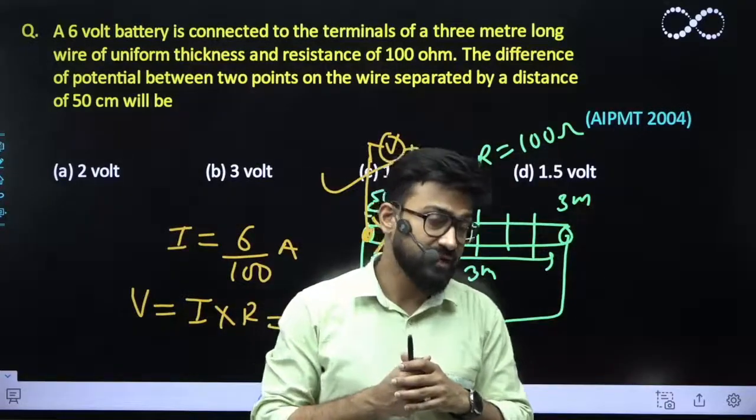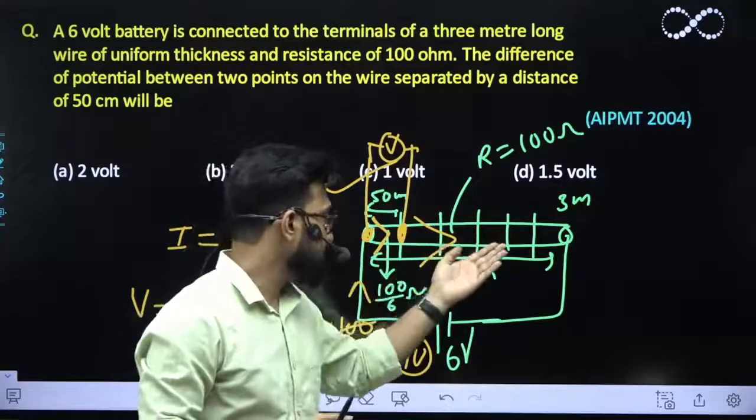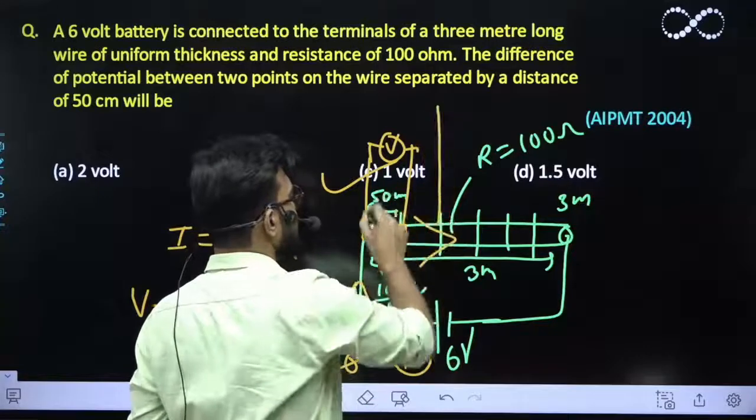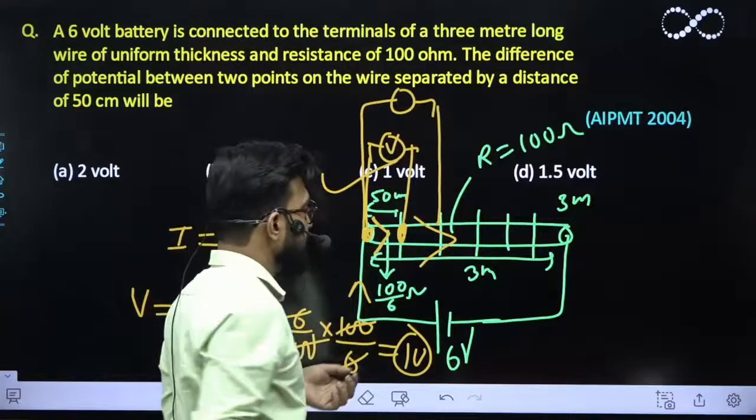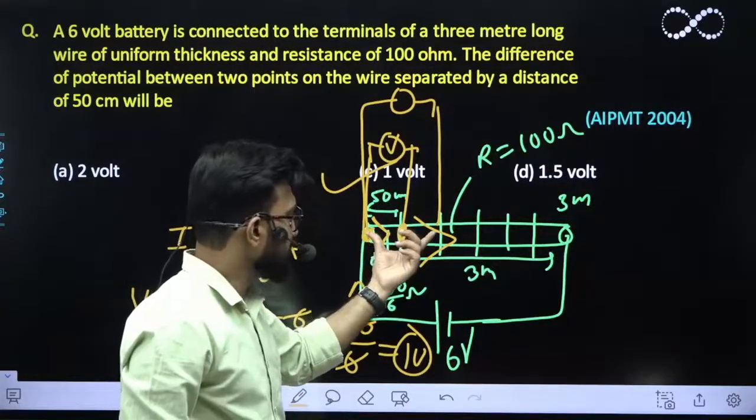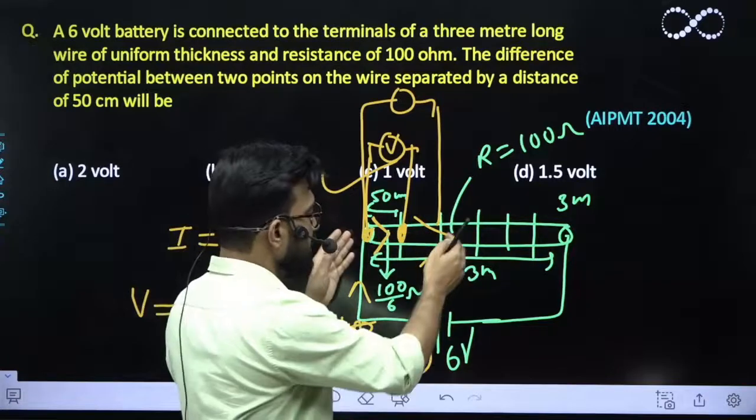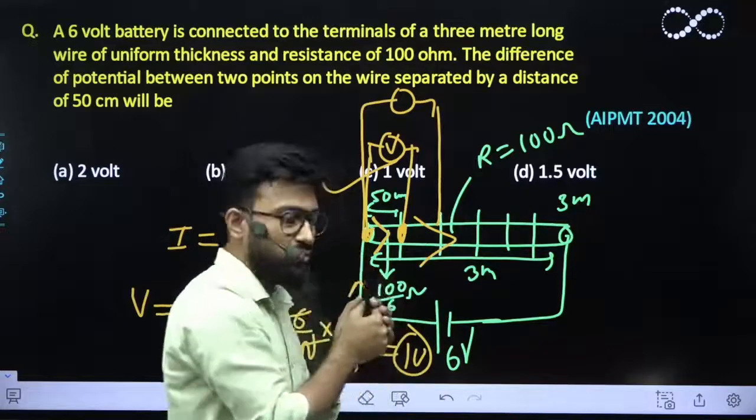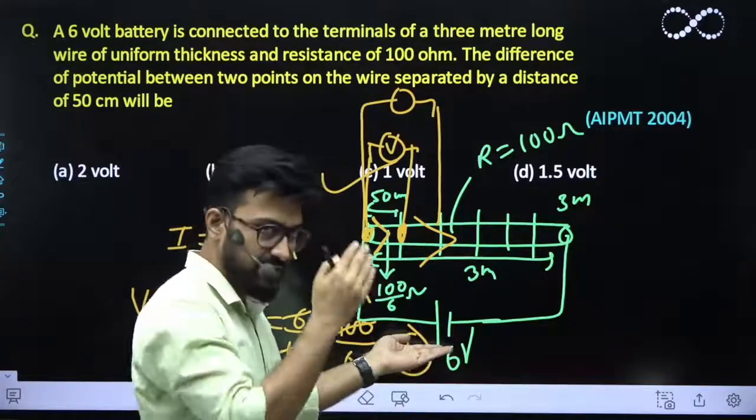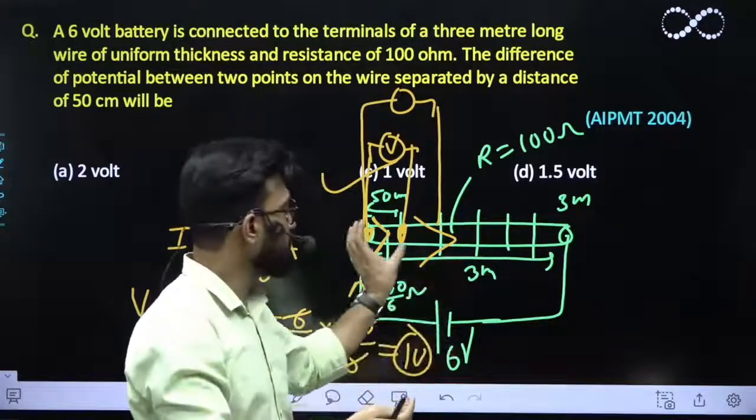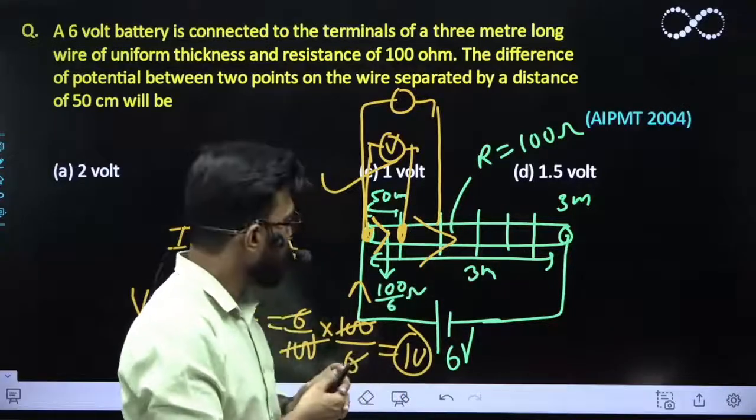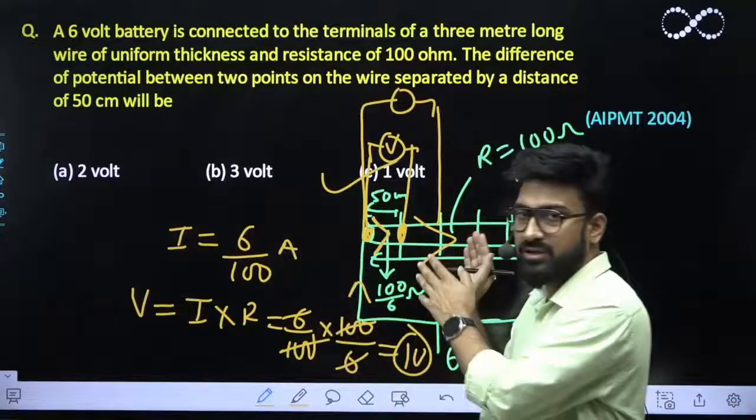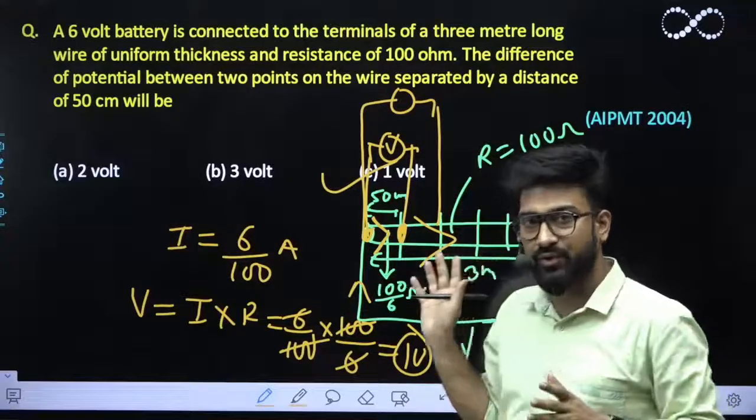Remember what you have done is you have calculated the potential difference across these two terminals. If I calculate the potential difference between these two terminals, these two would have a potential difference of 2 volt because 6 volt can be divided into three equal parts as 2 volt, 2 volt and 2 volt. Similarly you can easily find out the potential difference between any two points of the section of the three meter wire.